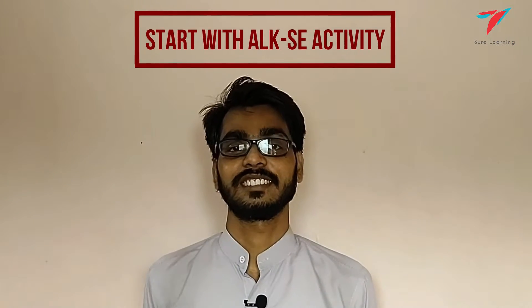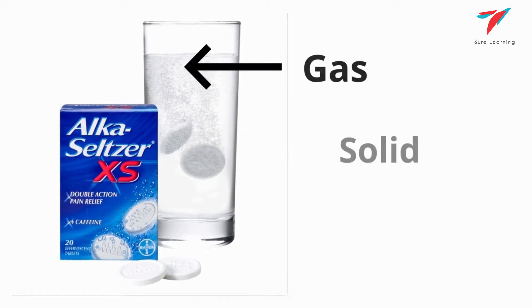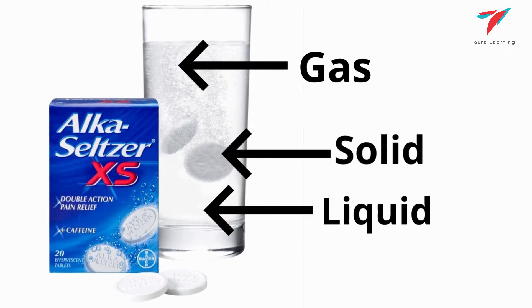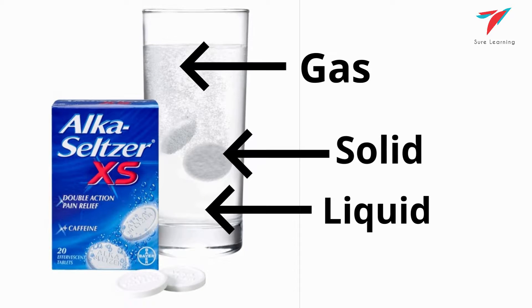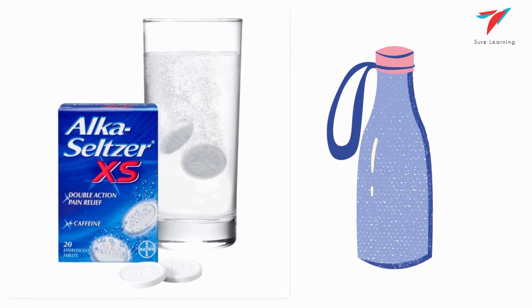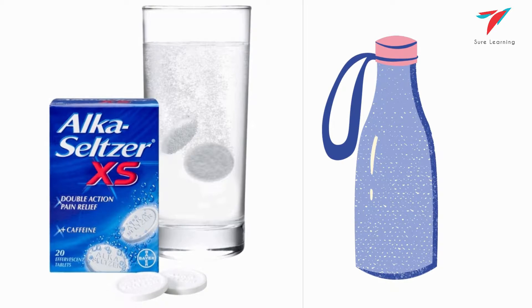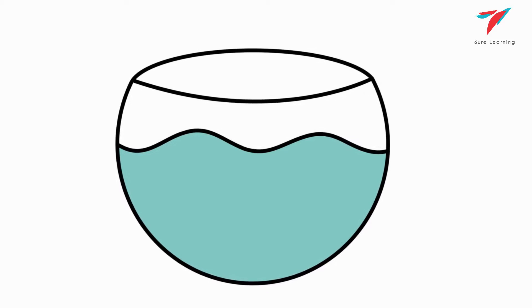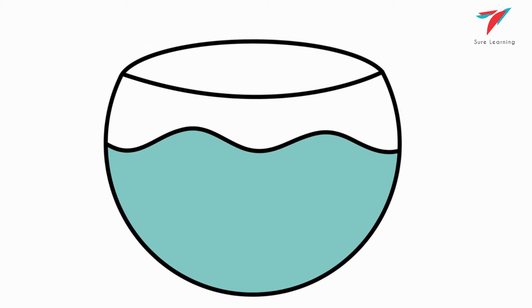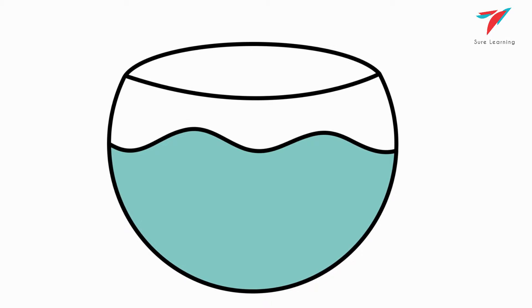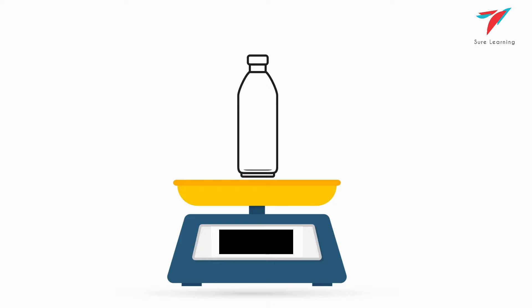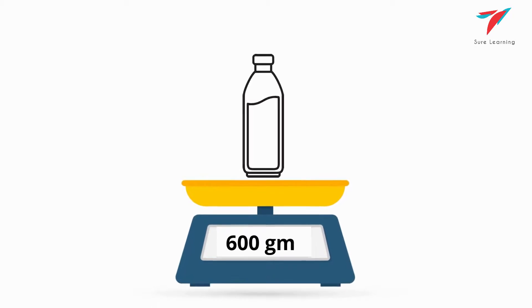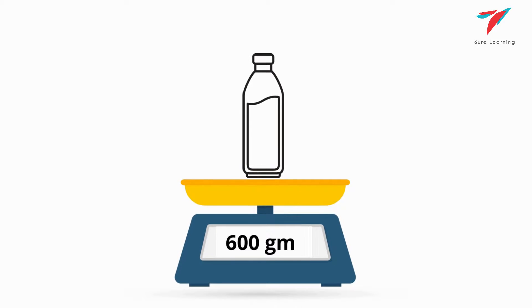Strategy one: the Alka Seltzer activity. This is an experiment based on Alka Seltzer, a pain relief medicine. With this activity, students will be able to see all three basic states of matter. We will need Alka Seltzer tablets, a water bottle, and some water. Fill the water bottle a little more than halfway with water. Explain to students that water is a liquid — you can pour the same water into a bowl of a different shape and show them that liquids do not have a definite shape but take the shape of their container. You can also weigh the empty bottle and then the bottle with water, explaining that liquids have mass and weight.